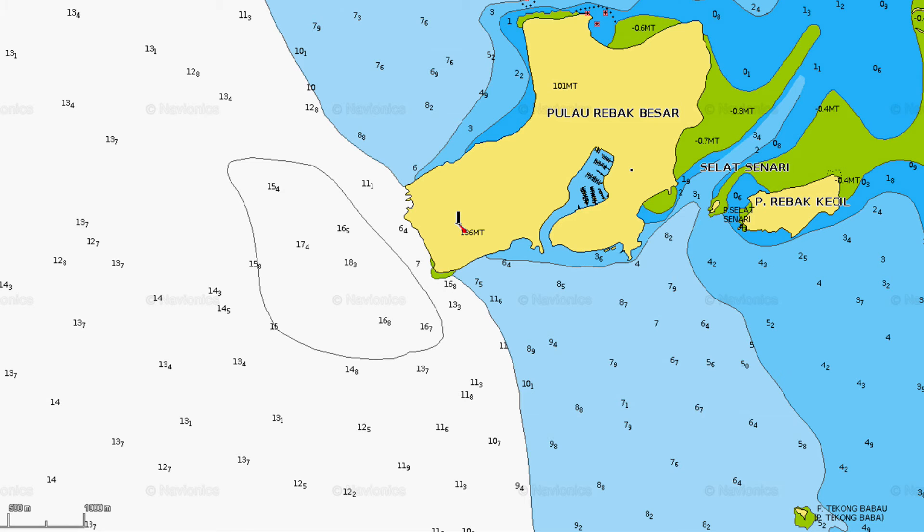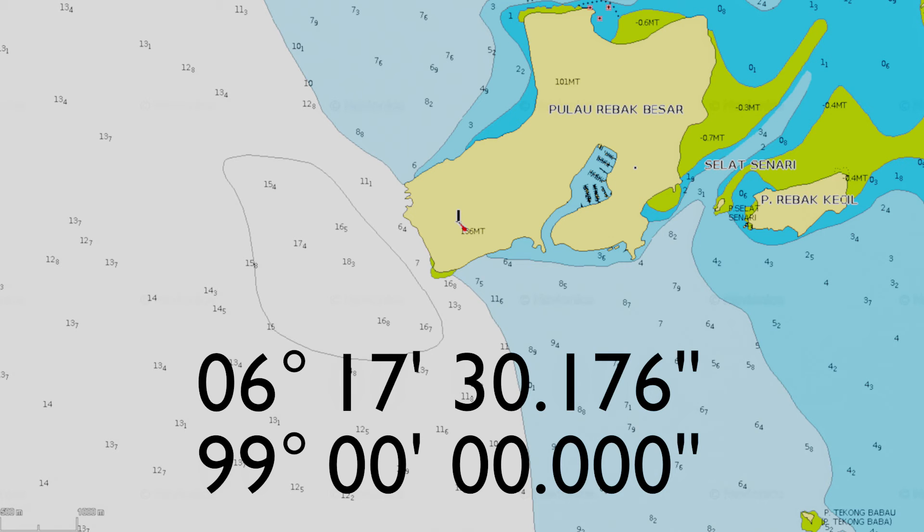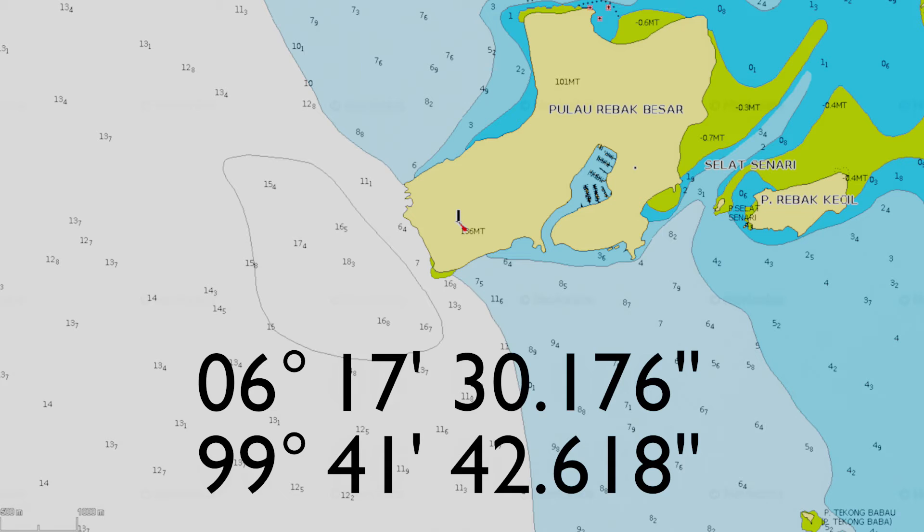Let's use as an example our entrance to Rebak Marina, Langkawi, Malaysia. Our latitude is 6 degrees north of the equator and is represented as a positive or north value. It is situated at 17 minutes, and for further accuracy, is at 30.176 seconds. Our longitude reading is 99 degrees east of the UTC, and as such is represented as a positive value or an east reading. Our coordinates in minutes are listed as 41 minutes, and for further accuracy, our seconds are represented as 42.618 seconds.